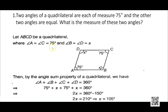Let ABCD be a quadrilateral where angle A equals angle C equals 75 degrees, and the other two angles B and D are each assumed to be x degrees. By the angle sum property: angle A + angle B + angle C + angle D = 360 degrees. Substituting: 75 + x + 75 + x = 360, so 2x = 360 − 150, giving x = 210 ÷ 2 = 105 degrees. So each of the other two angles is 105 degrees.